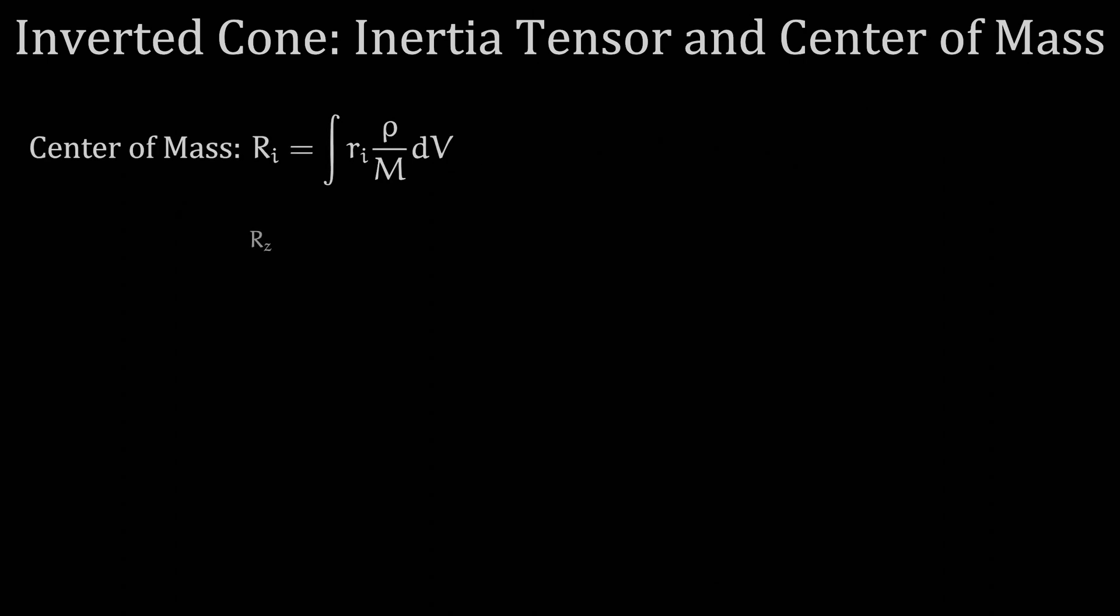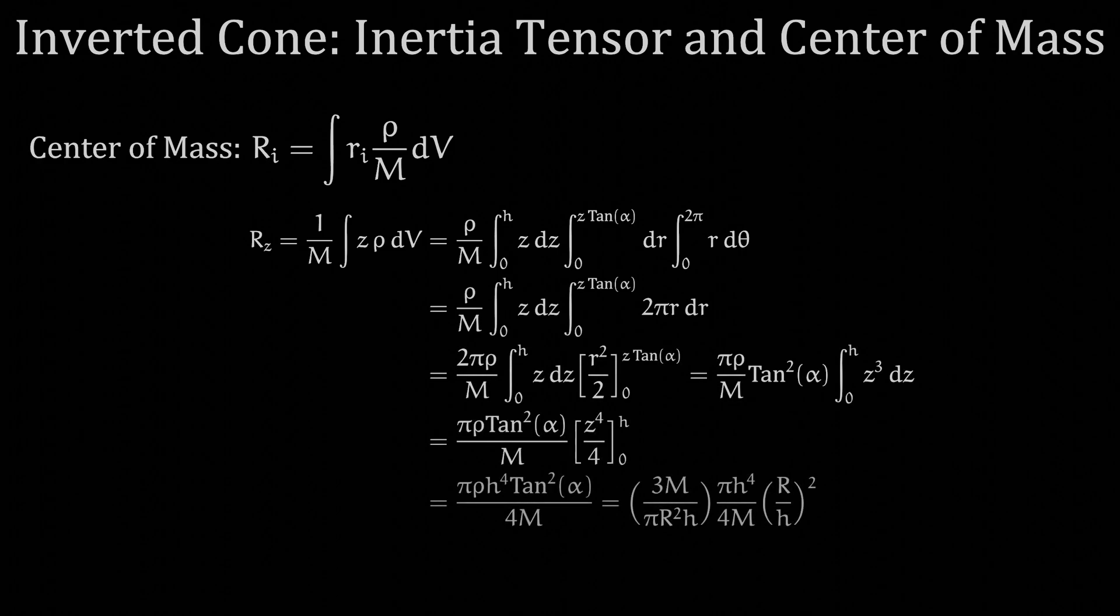To find the center of mass along this coordinate, we integrate along the coordinate z times the density over mass and through the entire volume of the cone, dV. Our z limits go from 0 to the height H, our radial limits go from 0 to z tangent of alpha, and our angular limits go from 0 to 2pi. Working our integrals from right to left, we get our result for where the center of mass lies on the z axis.